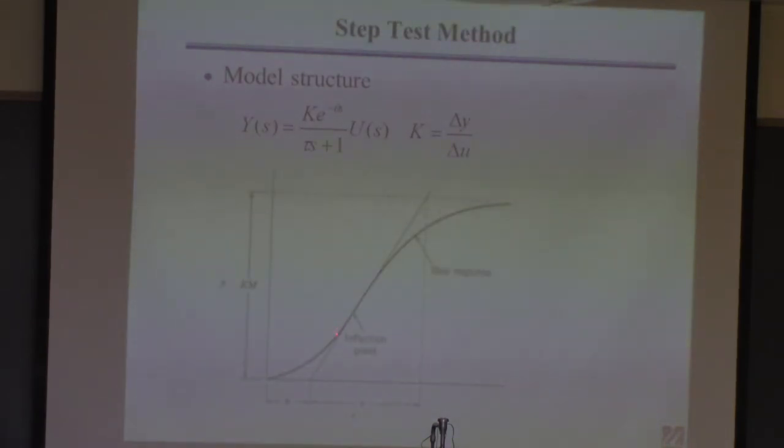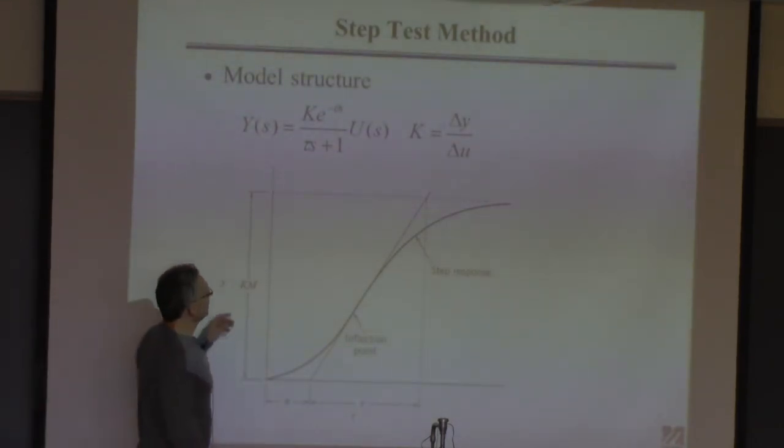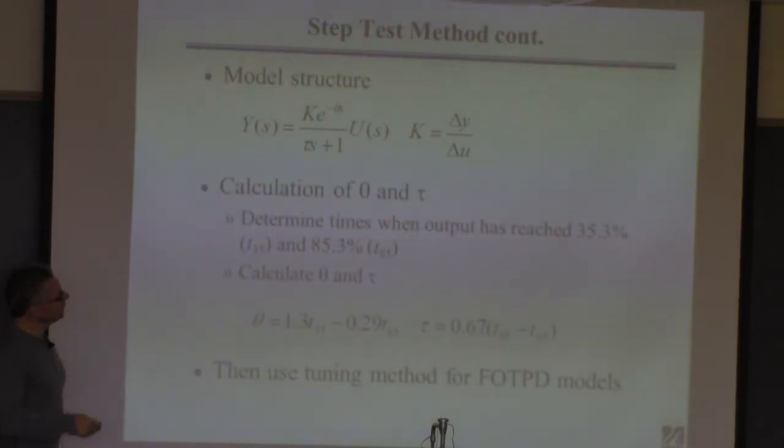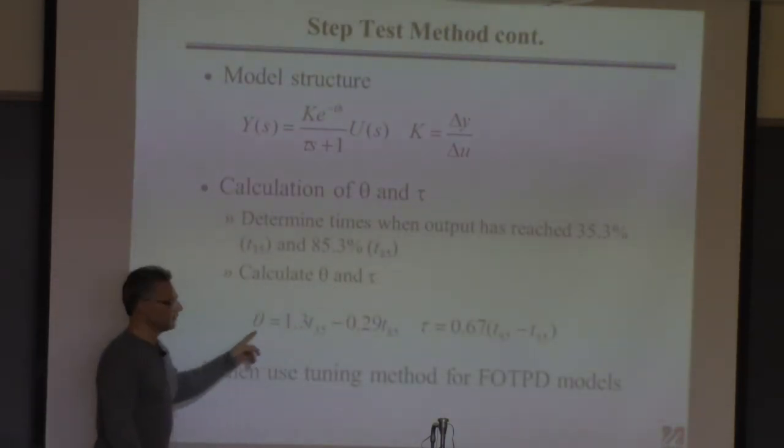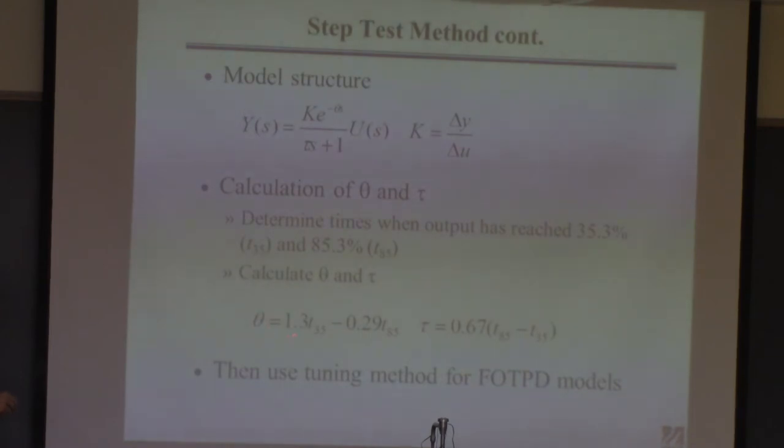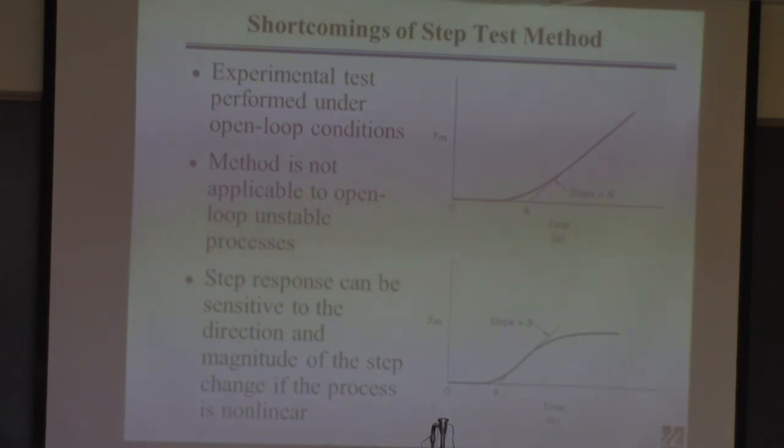You might recall we used this method. Let me go back to this slide. You find when the response is 35% complete and 85% complete. You say, it went from this value to this value. This is about 35% complete. That would be t35. And then up here somewhere is 85% complete. That's t85. So you find those two times and then you use these formulas. This is just repeated. There's nothing new on this slide. Just repeated from the previous lecture. So then you have the theta using this formula, using those two times. And then you can find the tau using those two times. So you have the k found by this, you have the theta and tau found by this. Now you have first order plus time delay model. You can do all the things I talked about.